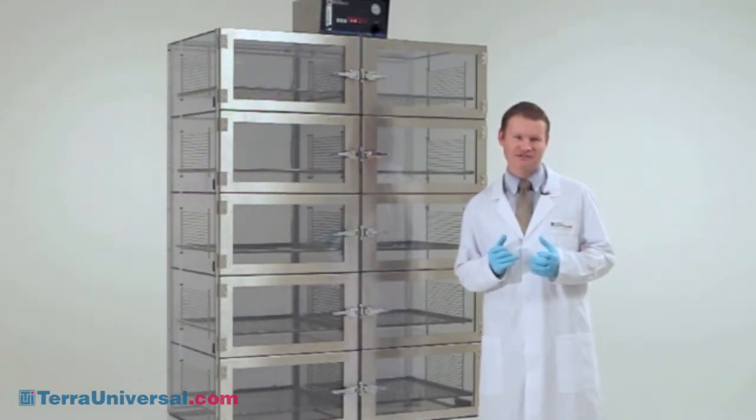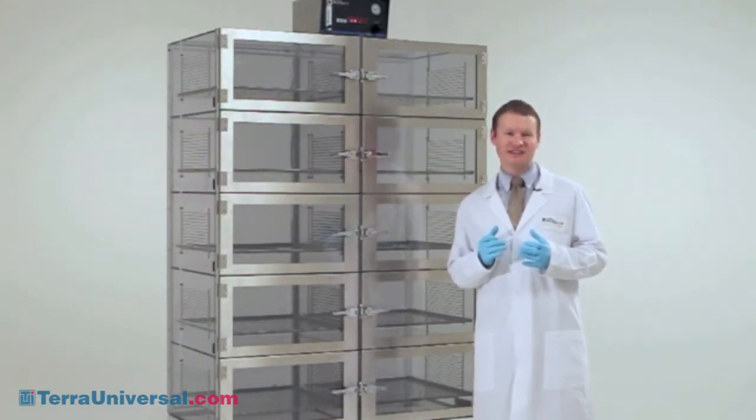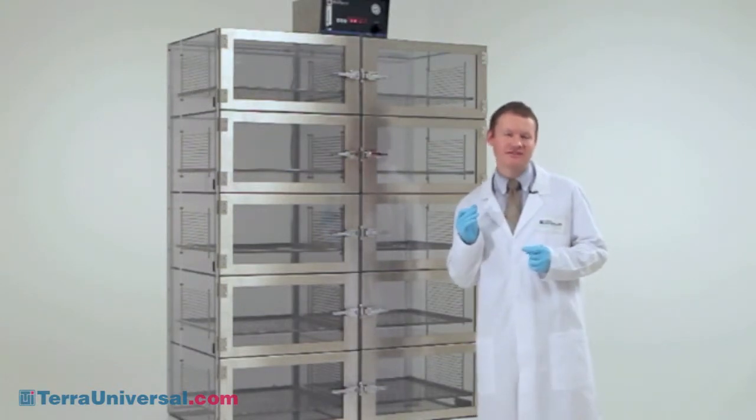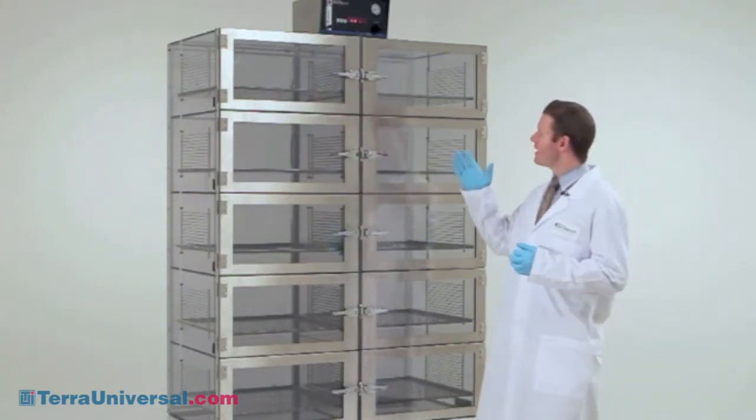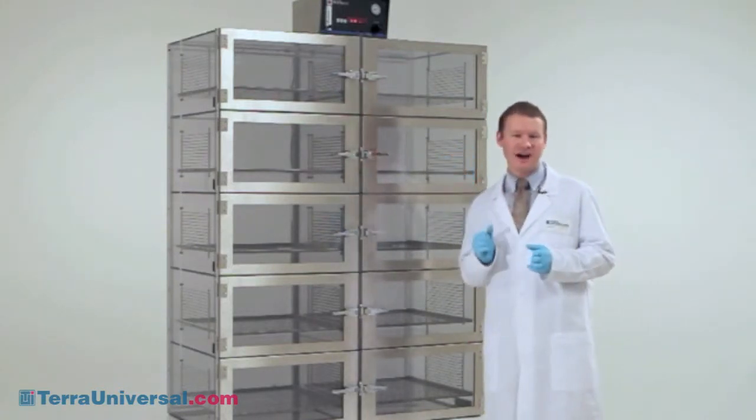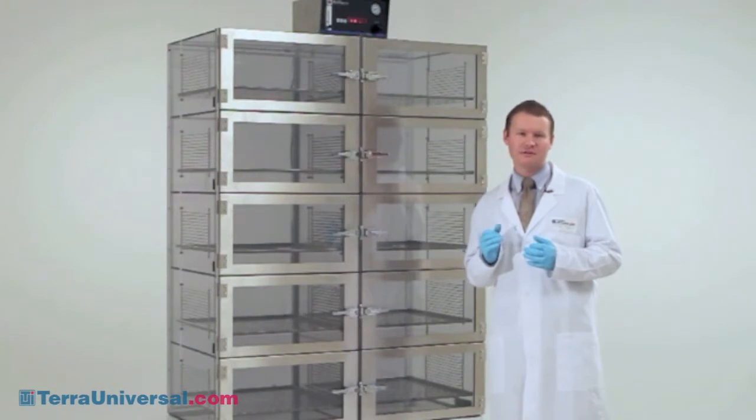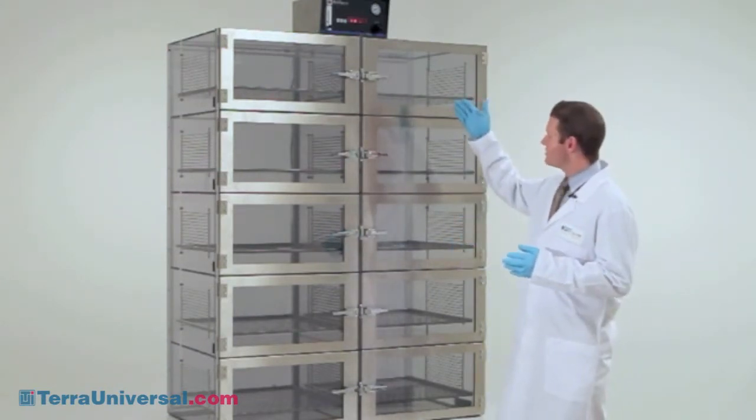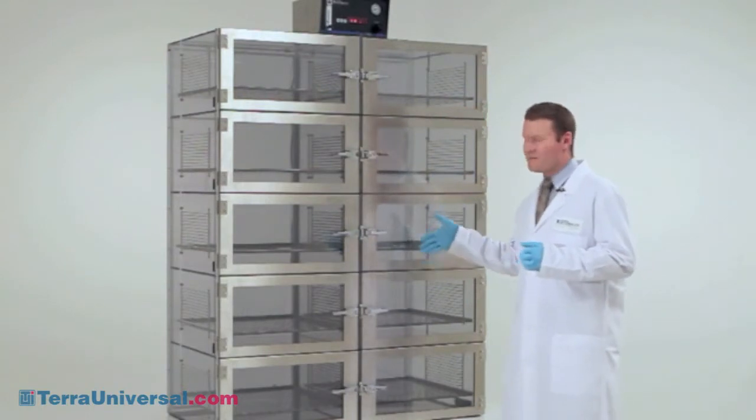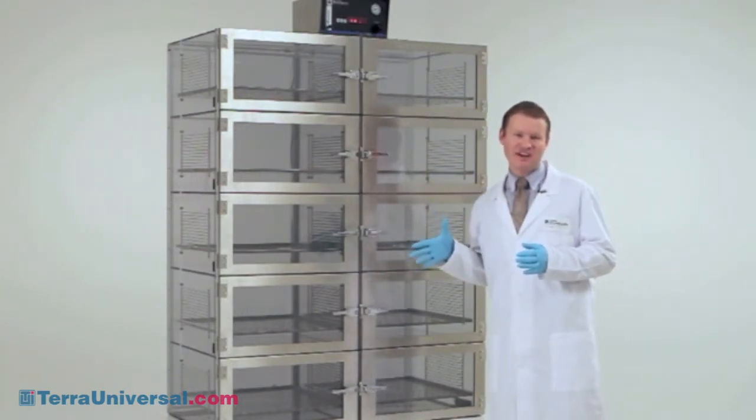Tera Universal's desiccators are designed to facilitate a low humidity environment by the ingress of nitrogen, which is a dry, particle-free compressed gas. That nitrogen is introduced through the back of the chamber, through a back plenum, into each individual chamber.